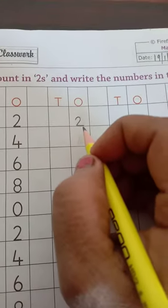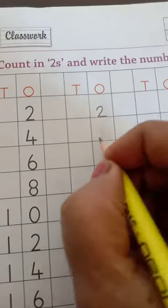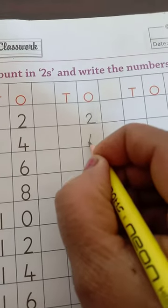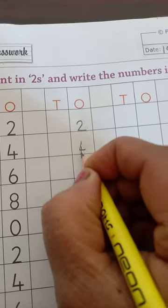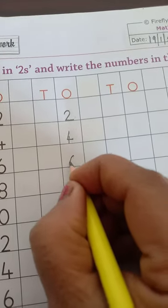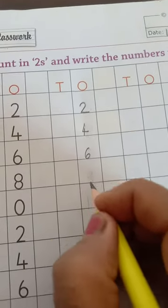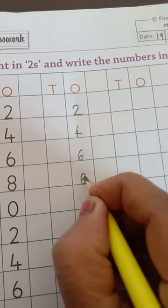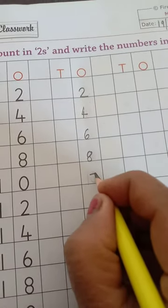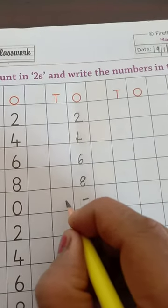2 one time is 2. 2 two's are 4, means counting 2 two times we get the number 4. 2 three's are 6, 2 four's are 8. Counting 2 five times we get the number 10.